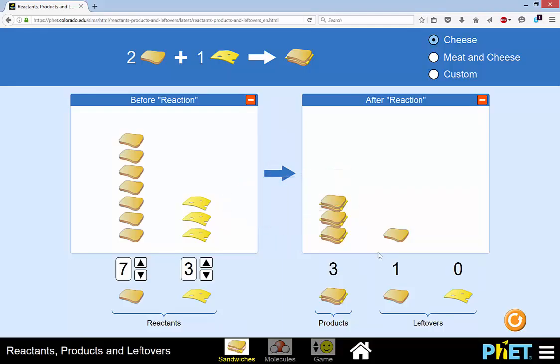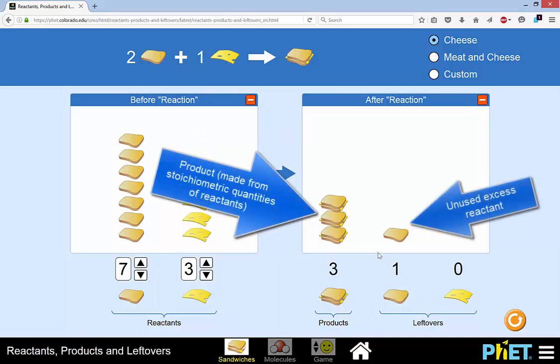The reactants that aren't completely used up are called the excess reactants. Here it was the bread. So what's left sitting in the reaction vessel or the plate at the end are as much product as was able to be made plus whatever unused excess reactants are left.